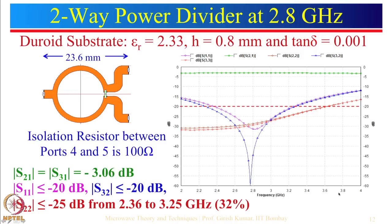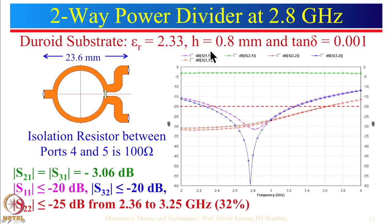Not all the time do we have to use glass epoxy, which is a lossy substrate; some applications require a good-quality substrate for better performance. Here is a design example at 2.8 GHz — this was a requirement from a defense organization. We used a Duroid substrate with very low tan delta of 0.001, epsilon_r = 2.33, and substrate thickness 0.8 mm.